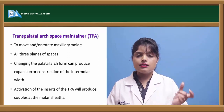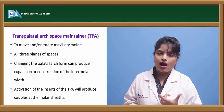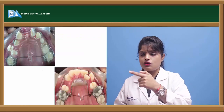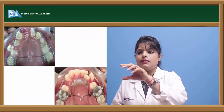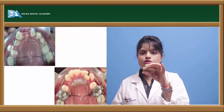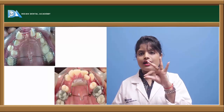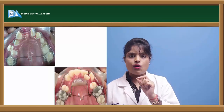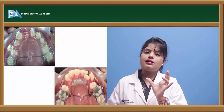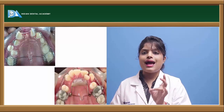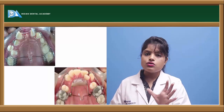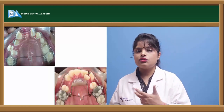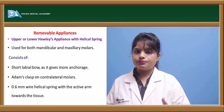The transpalatal arch type of space regainer is generally used in the maxillary arch. It has a U-shaped structure present inside the main wire, which can be expanded and contracted for space regaining. When activated, it helps in distalization of the molars and arch expansion, and applies forces in various three-dimensional planes.